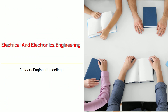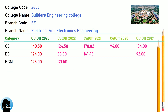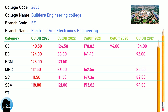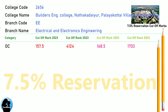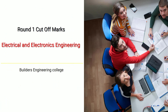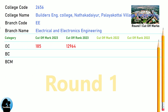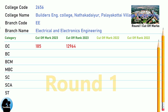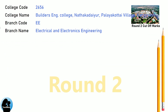DNA Cut-Off for Builders Engineering College in Electrical and Electronics Engineering. DNA 7.5 Reservation Cut-Off for Builders Engineering College in Electrical and Electronics Engineering. DNA Round 1 Cut-Off and Round 2 Cut-Off for Builders Engineering College in Electrical and Electronics Engineering.